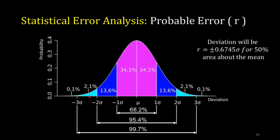The Gaussian curve relates deviation to probability of occurrence. Here, the region between minus sigma and plus sigma — one standard deviation either side — covers 68.2% of the area under the curve. This area is determined by integrating that region. For two sigma limits, 95.4% of readings lie within that range.